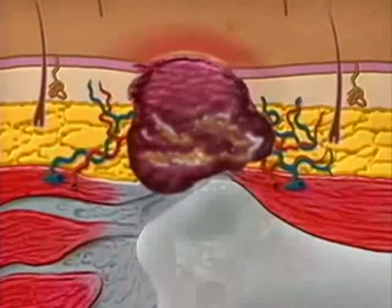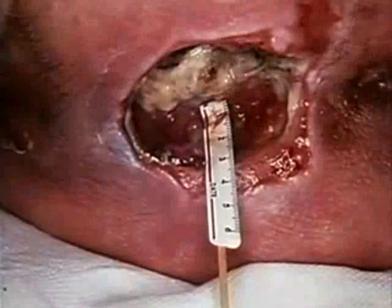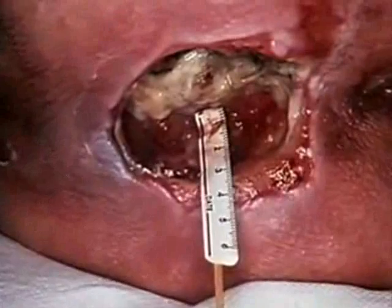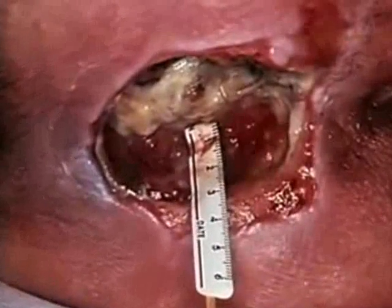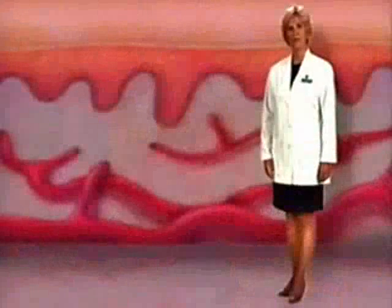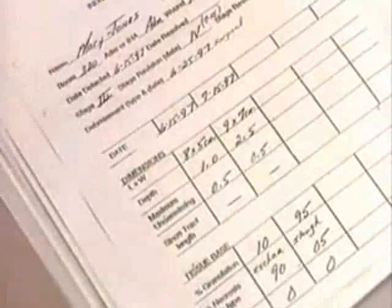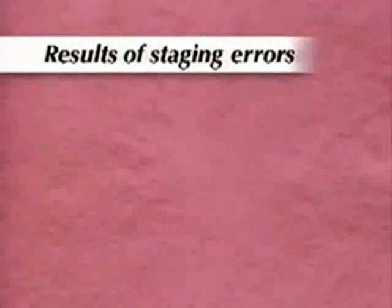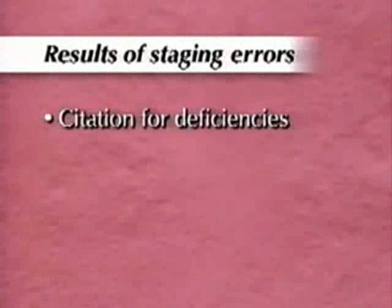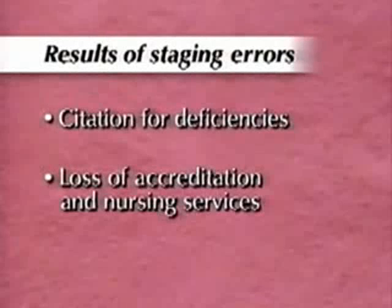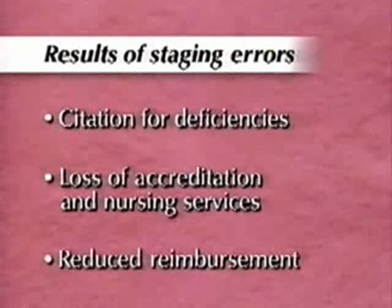Suppose a necrotic pressure ulcer were documented as stage 3, but turned out to be stage 4 when the necrotic tissue was removed. This staging error would mistakenly suggest that the pressure ulcer had deteriorated. If this error happened regularly, the facility would seem to have a problem with managing pressure ulcers. Such errors would become part of the medical record, which could be reviewed by state surveyors and regulatory bodies such as JCAHO. Therefore, staging errors could lead to citation for deficiencies, loss of accreditation and skilled nursing services, and reduction of the level of reimbursement.